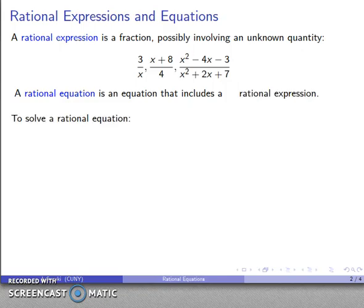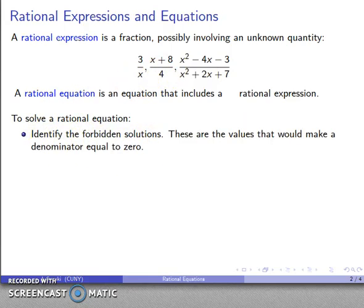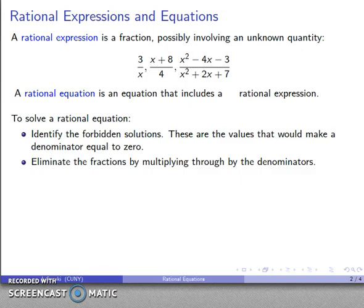A rational equation is an equation that includes a rational expression. So how do we solve rational equations? Because we're looking at rational expressions, it is absolutely important to begin by identifying the forbidden solutions. Anything that makes a denominator equal to zero, we cannot allow as a solution. Other than that, probably the best way to proceed is nobody likes fractions. So what we can do is multiply through by all of the denominators, and that's going to eliminate all of our fractions, and then we'll have an equation of some form which we'll hopefully be able to solve.